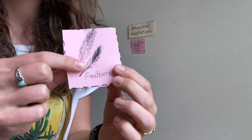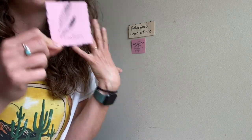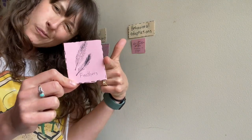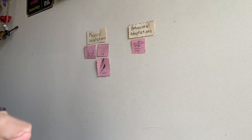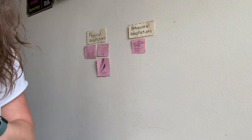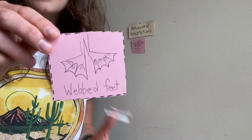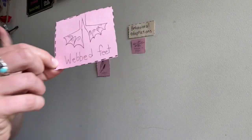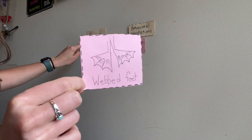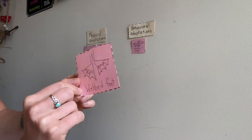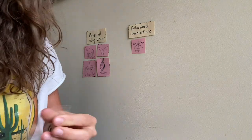Feathers. Does feathers have to do with doing something, or is it physical — is it a part of the animal and the way that it looks? If you said it's part of the animal and the way that it looks, then you are correct, and you're going to sort that right over here into physical adaptations. Next, let's pick webbed feet — you know, like these little duck feet. Is that going to be a behavior or is it something physical about the animal? I'll put it in the category — I think you already know where it goes.